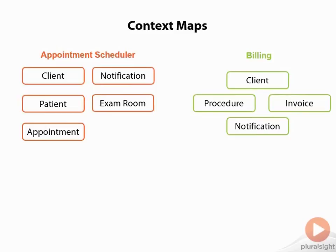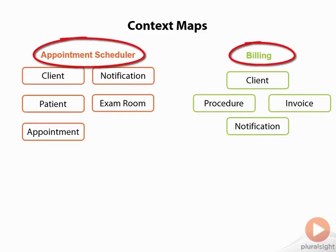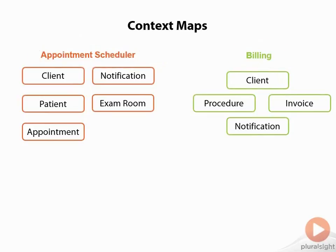A good first step for an existing application is to create a map that shows how things are. Remember that the names of your contexts are also important, as you'll refer to them frequently when discussing different parts of the application. It may be that things are not as separate as they should be, and that's worth noting. If you have separate teams responsible for different contexts that share resources, it's important that each team understands which aspects of the application they can change on their own, and which are shared dependencies they'll need to coordinate with other teams to avoid breaking things.